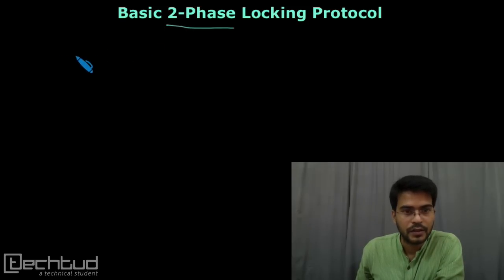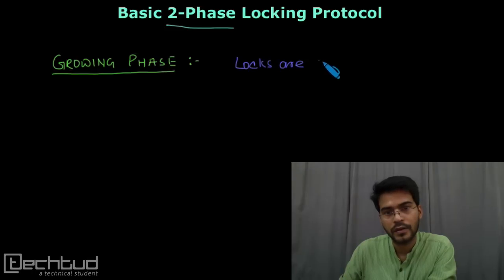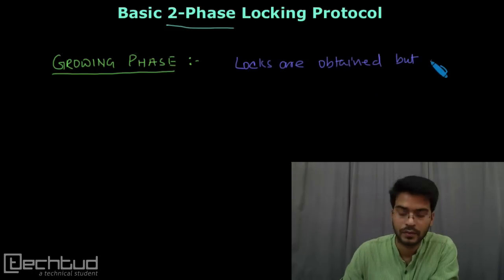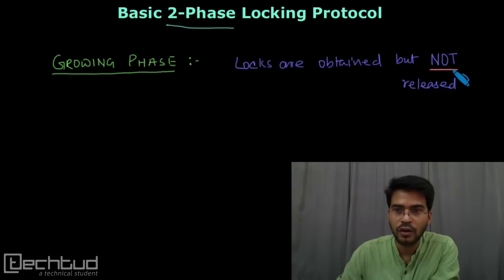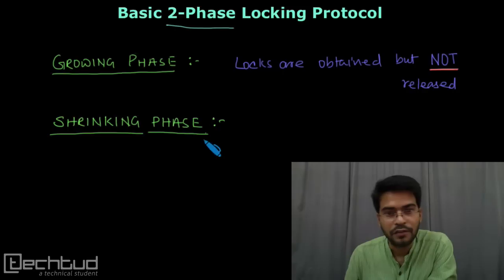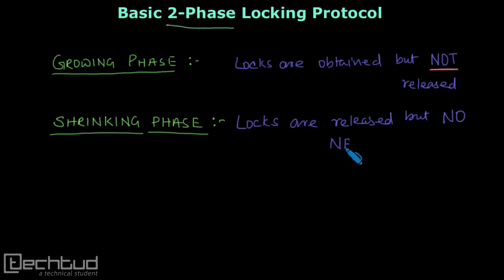The first phase is called the growing phase. In the growing phase, only locks are obtained but not released — it means only locks will be acquired in this phase but no lock will be released. The next phase is the shrinking phase. In the shrinking phase, only locks are released but no new locks will be taken.